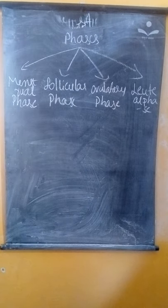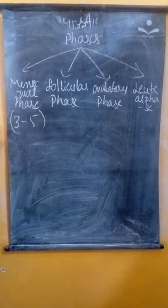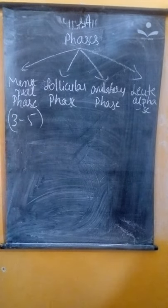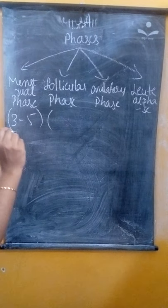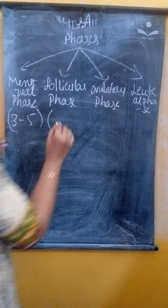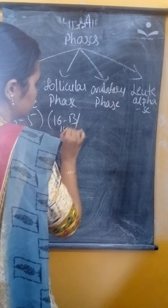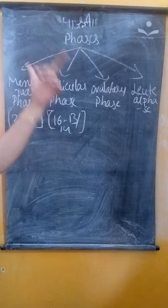The menstrual phase starts from three to five days. Then follicular phase starts from six to thirteen, fourteen days. I am talking about every twenty-eight day menstruation cycle.